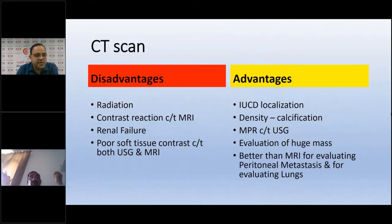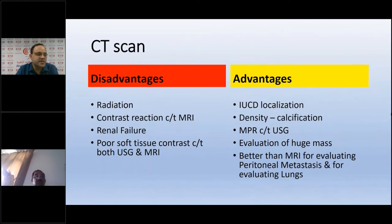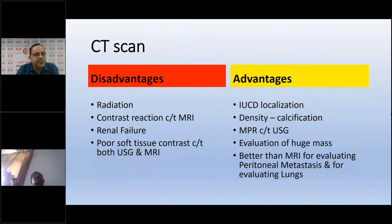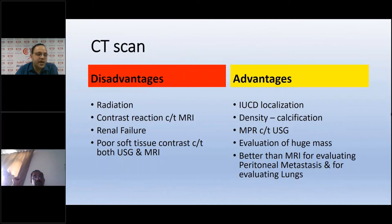Let's start with CT scan first. The disadvantages are discussed first because CT scan is used only in special conditions when evaluating the female pelvis. The most important disadvantage is radiation. Contrast reactions in CT are more compared to MRI. In cases of renal failure we cannot use CT scan, and CT scan has very poor soft tissue contrast compared to both ultrasound and MRI.